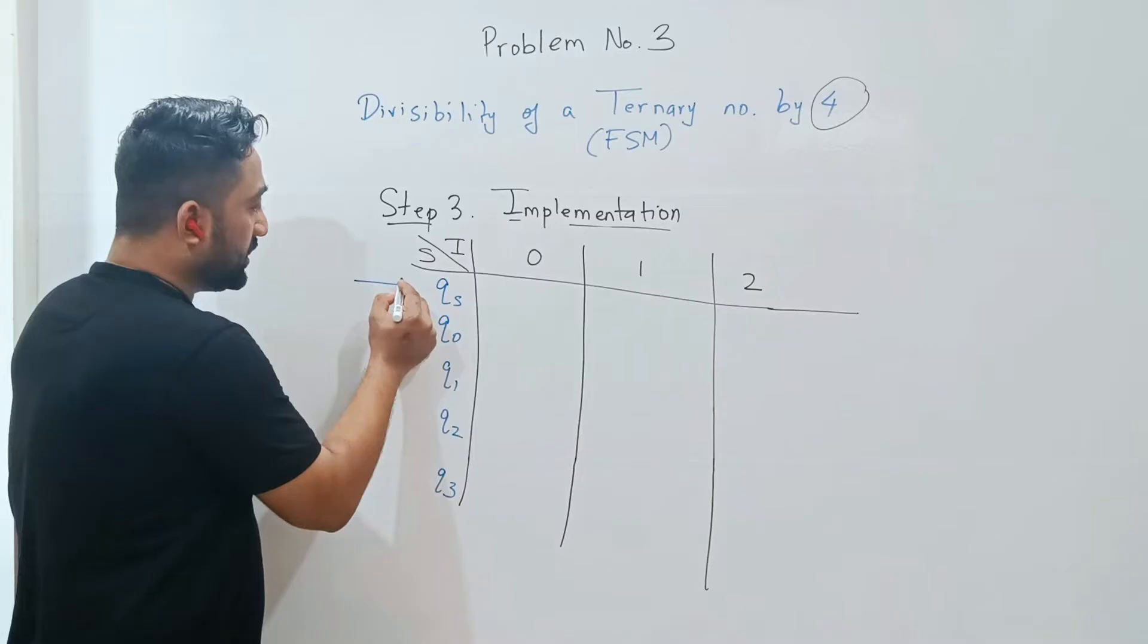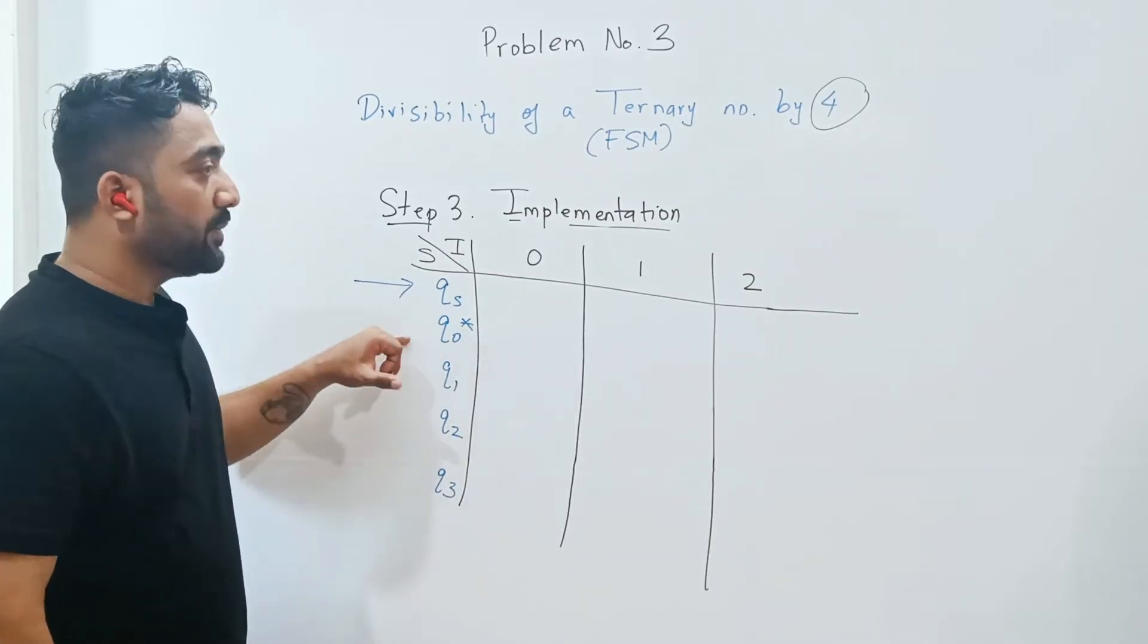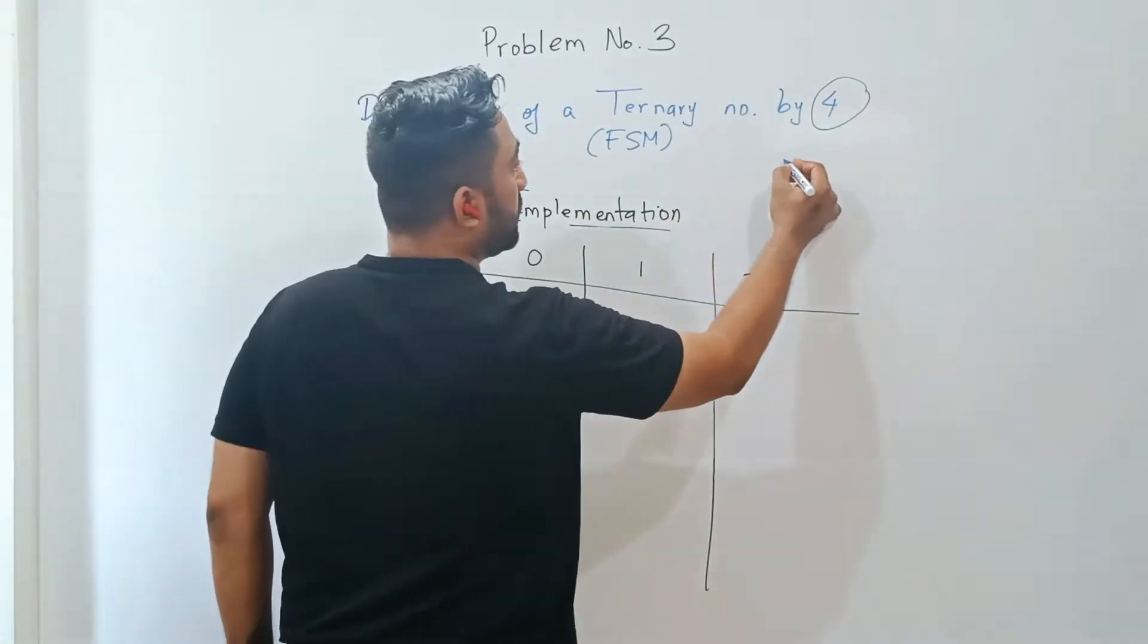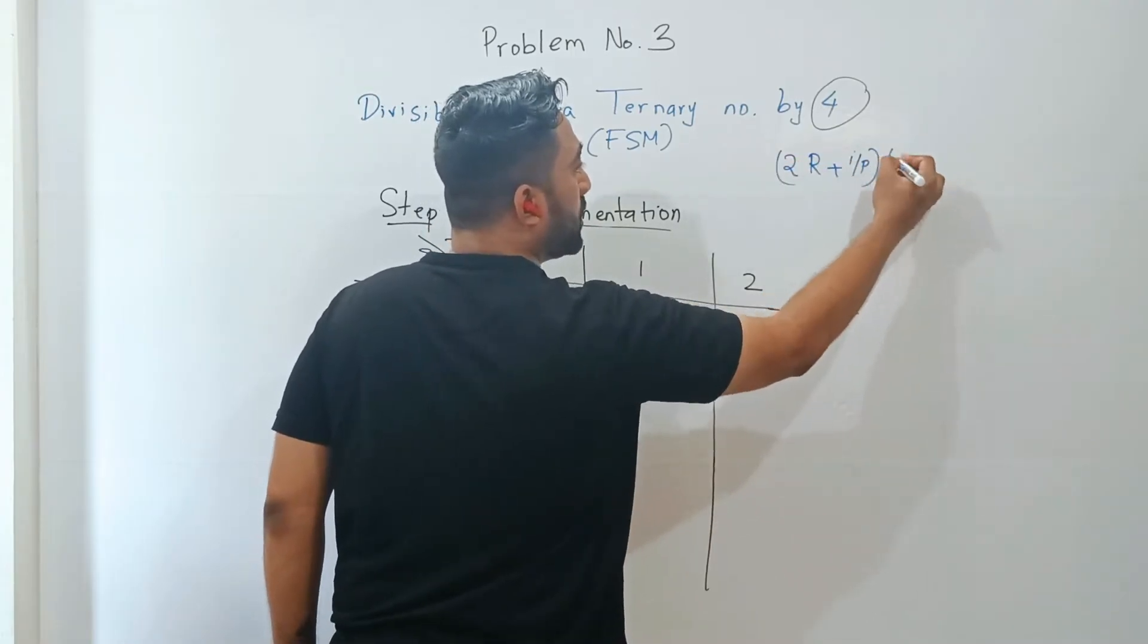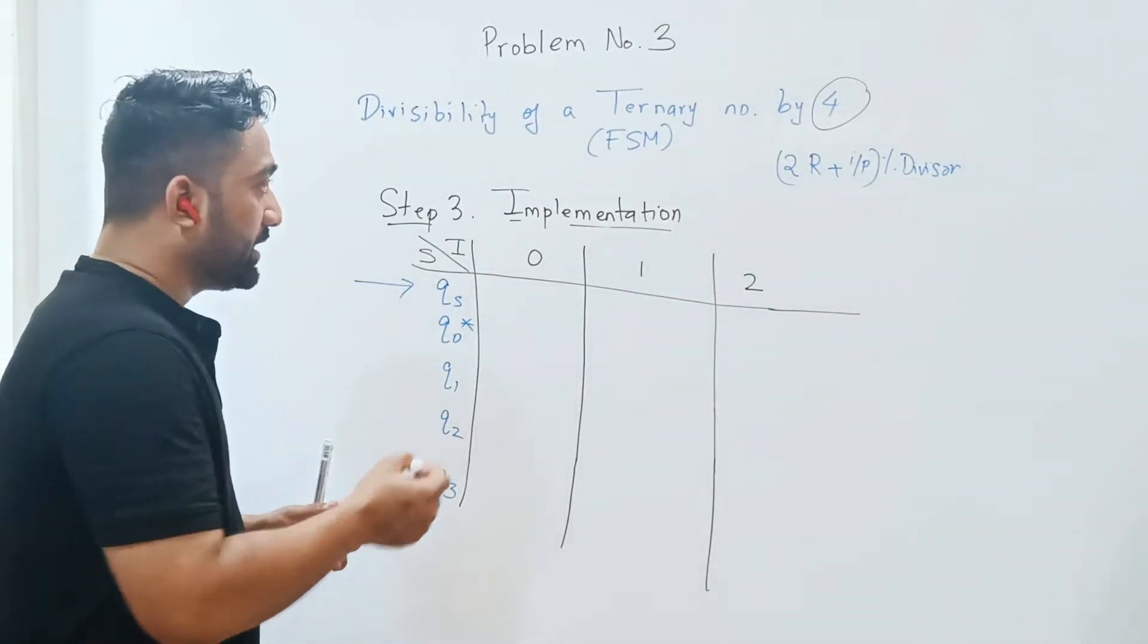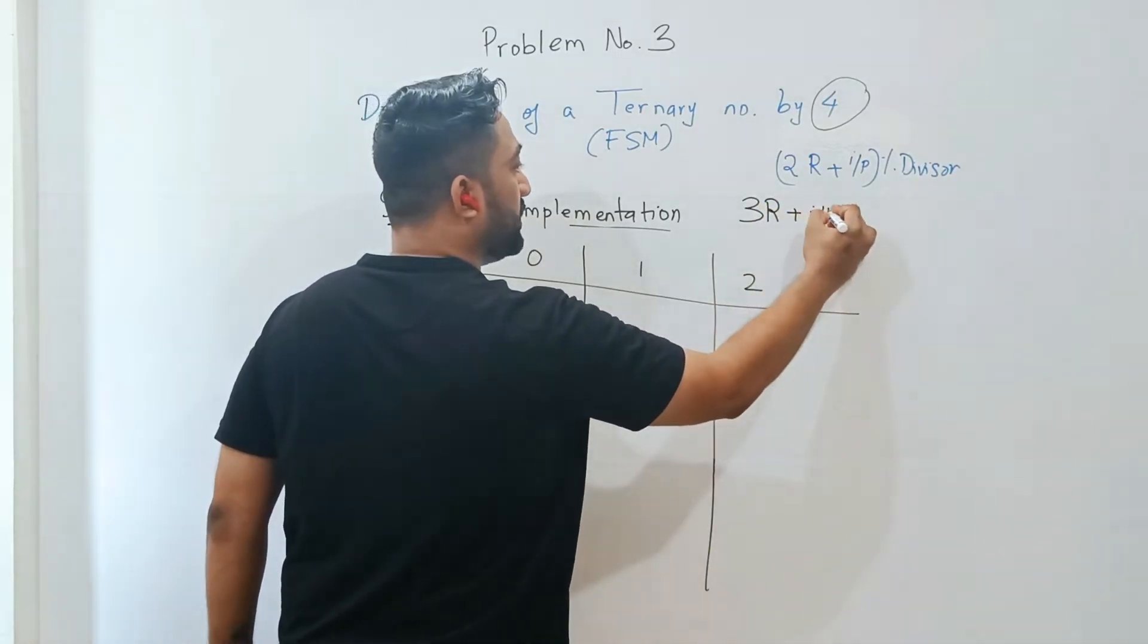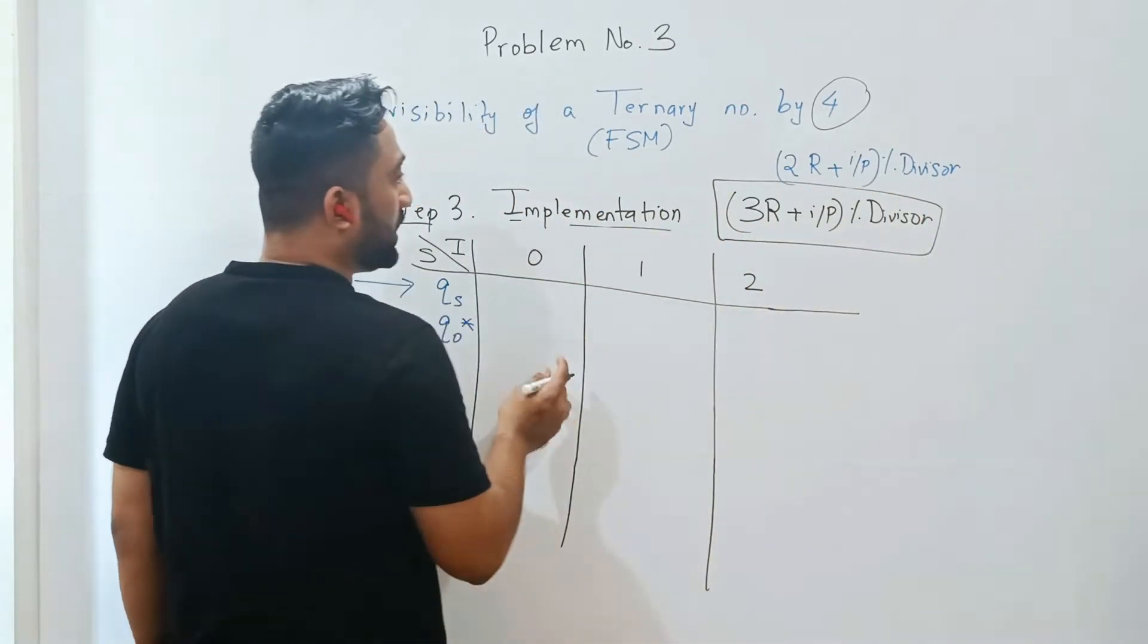This is the initial state and this is the final state. We've already seen that q0 should be the final state because here we get the remainder as 0. In the previous case for binary numbers, we had the formula 2 times r plus input mod divisor. A similar formula we'll use here, but there will be a slight change. The formula will be 3r plus input divided by or mod divisor.